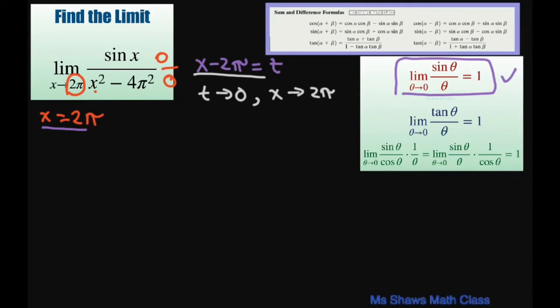So just using this fact here, if we let t equal x minus 2π, basically you just subtract the 2π and set it to t.